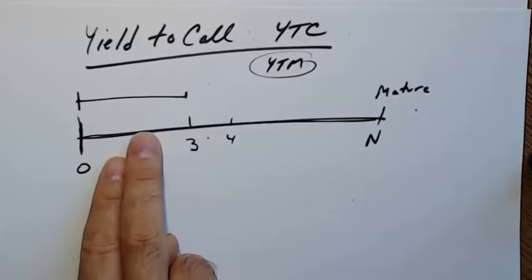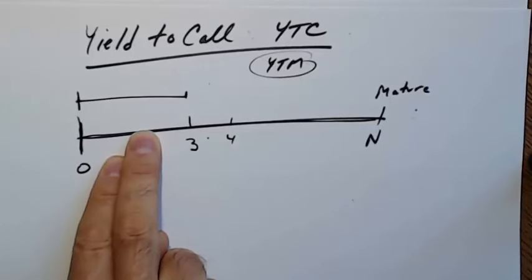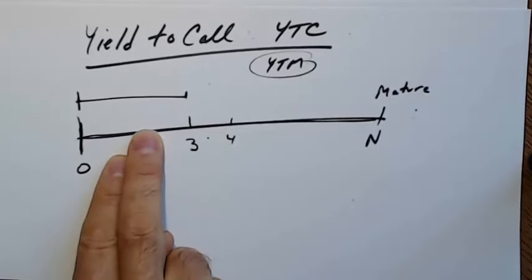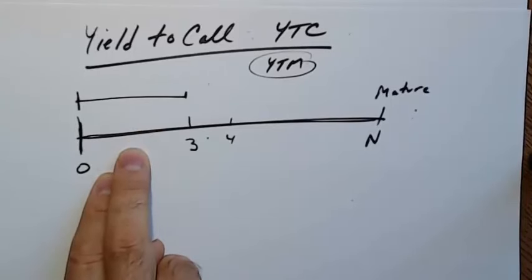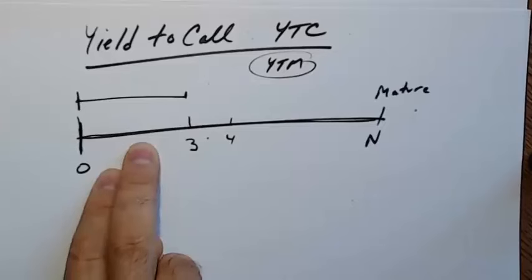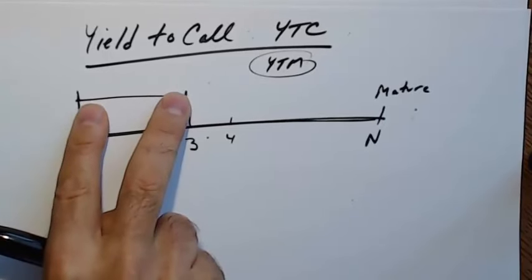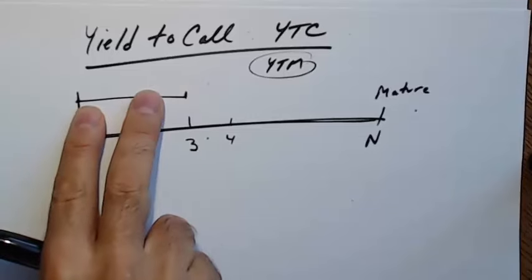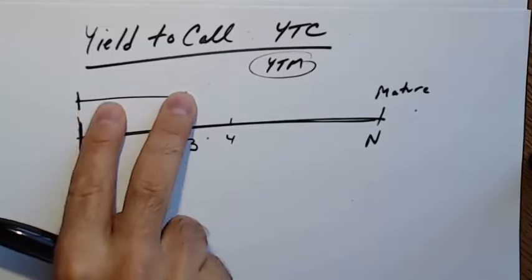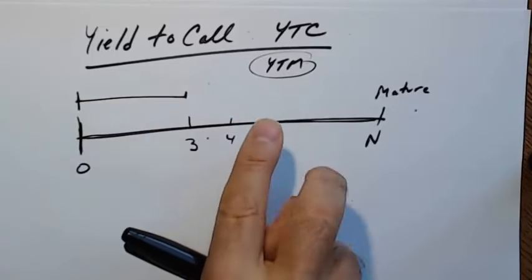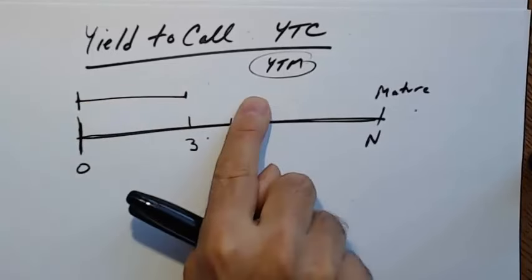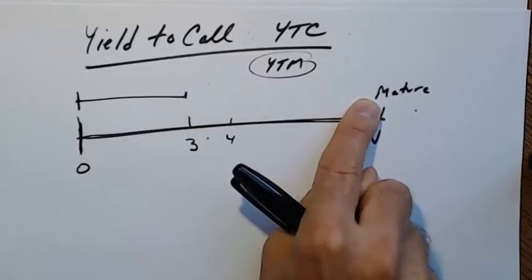Usually, when companies issue bonds, they are non-callable for an initial period — say the first three years — protecting bondholders so that their bonds aren't called shortly after purchase. After that deferred call period, the bond may be called at any time before maturity. The call is deferred for that protection period.